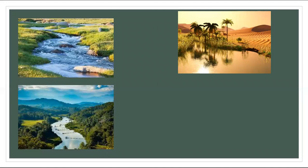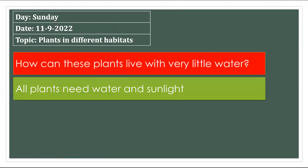Here you can see the stream and the river, with some small plants, big plants, and trees. All plants need water — they are green because the water is enough and they can grow. But in deserts, rain is the only water source for plants like cactus.